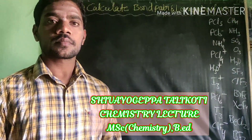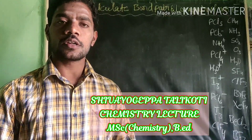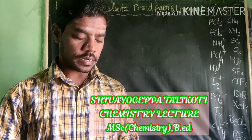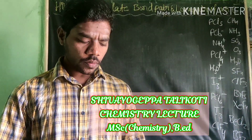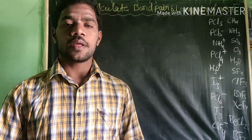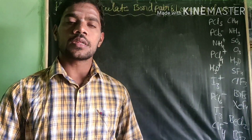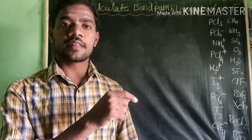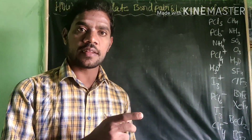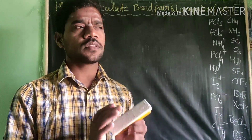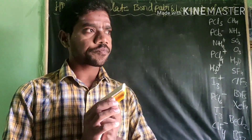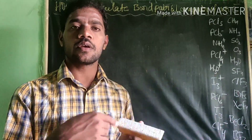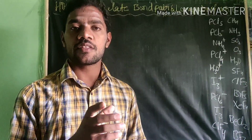Hi students, today I am going over one of the important concepts: how to calculate the number of bond pairs and number of lone pairs of electrons in a molecule. From this basic fundamental, we are going to study the structure and hybridization of the molecule.